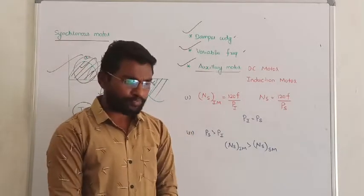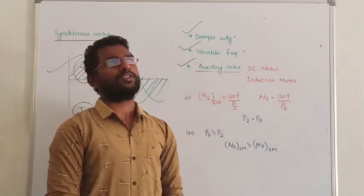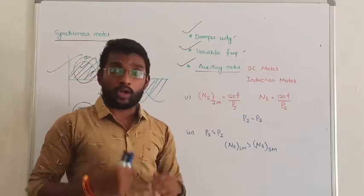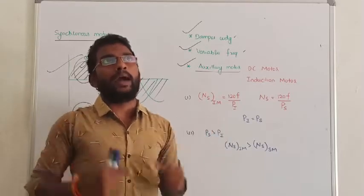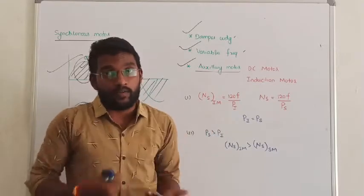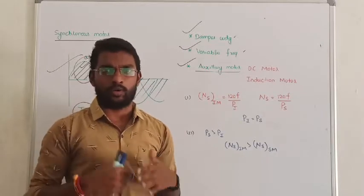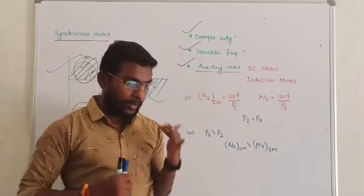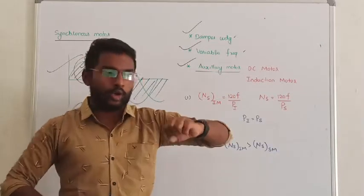So what do we do? The synchronous motor rotor is made to rotate. The rotor is given DC excitation and brought up to synchronous speed — that is how the synchronous motor is run using the auxiliary motor method. The synchronous motor shaft is coupled to the auxiliary motor.